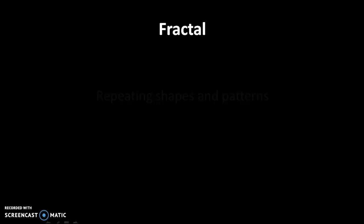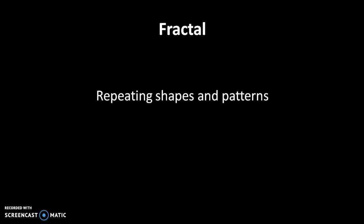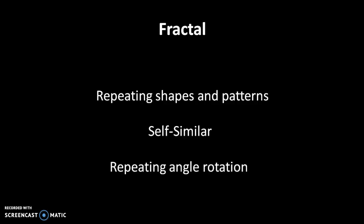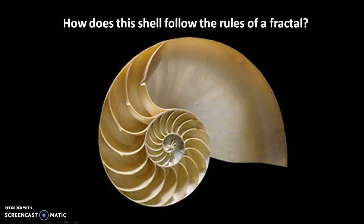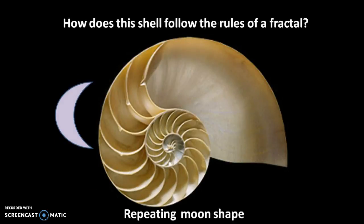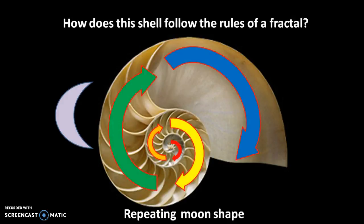A fractal has three qualities: repeating shapes and patterns, self-similarity, and repeating angle rotation. How does this shell fit the qualities of a fractal? Pause the video and take some time to think and talk about it. Let's look at the repeating shape and pattern. You probably noticed the repeating moon shape — these moons are all geometrically similar, and they grow outward in the spiral pattern.